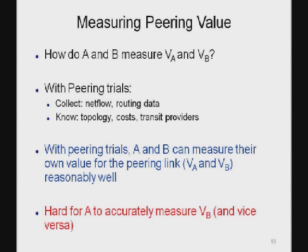How do networks actually go about measuring these values V_A and V_B? Assuming peering trials, networks temporarily set up a peering link and collect net flow data, routing data, and so on. Since they know their own topology, cost structures, and transit providers and pricing, it's reasonable that A and B can measure their own value for the peering link reasonably well. However, it will be very hard for A to accurately measure the value for the other network — A is not going to be able to measure V_B very accurately, and vice versa.